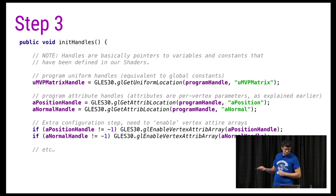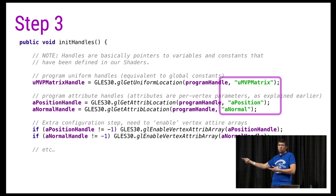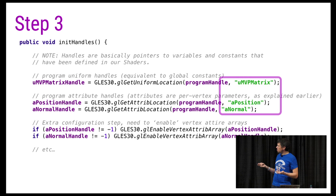Step three — getting handles. You literally give the string that is the actual variable name in the shader. So it's through a string — might seem a bit clumsy, but that's how it works.